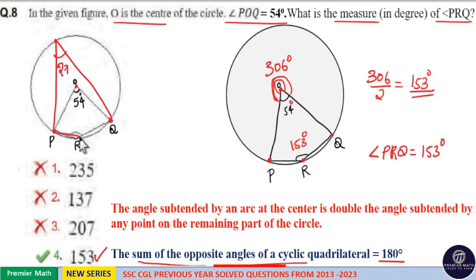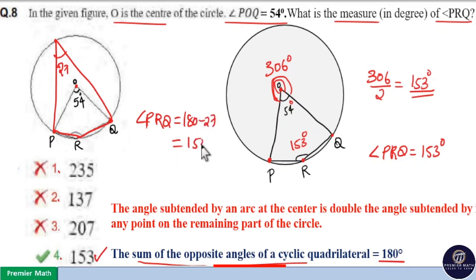Now this is a cyclic quadrilateral, which means the sum of opposite angles is 180 degrees. Therefore, angle PRQ equals 180 minus 27, which equals 153 degrees.